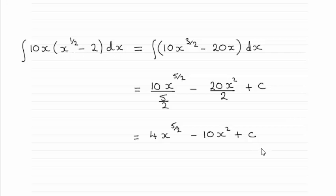And to do this, all we do is just expand out the bracket, giving us 10x to the power 3 over 2 minus 20x. Don't forget we've got more than one term here, so do put it in brackets.